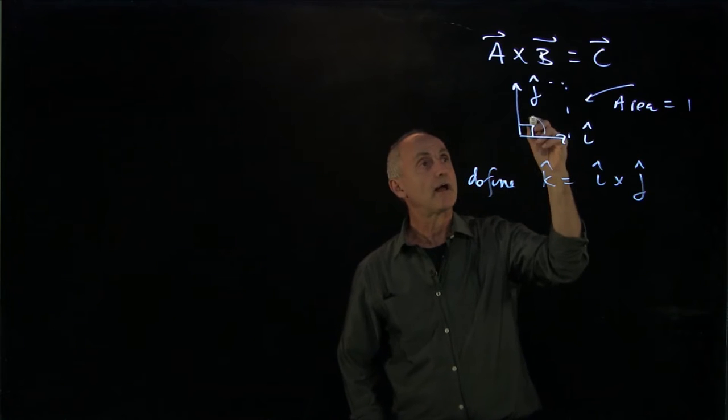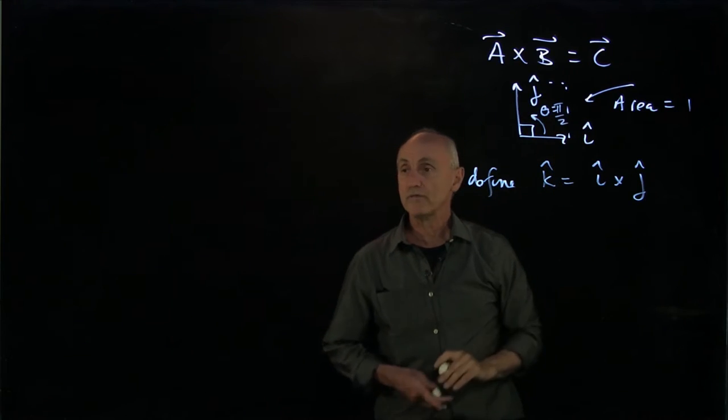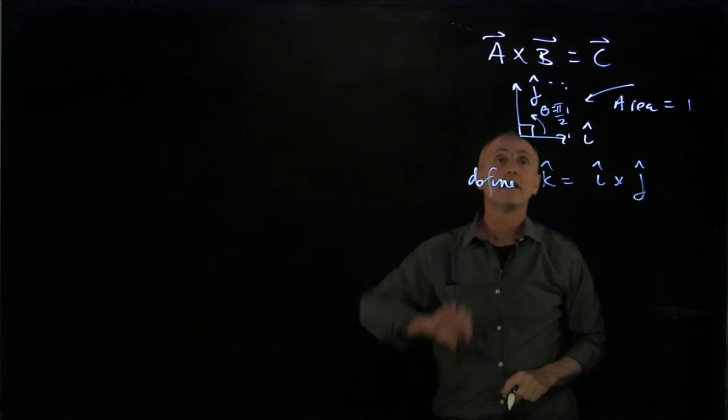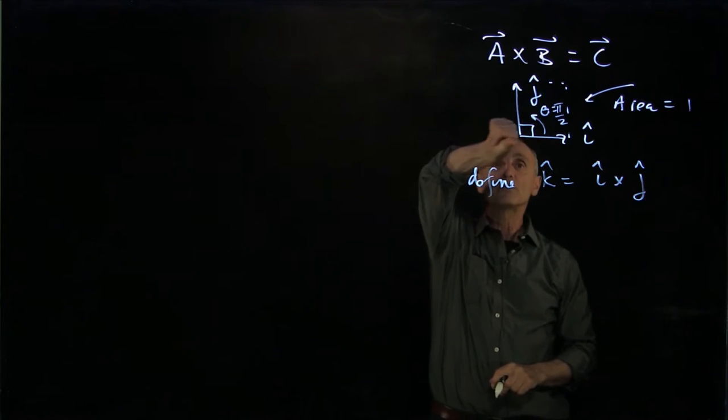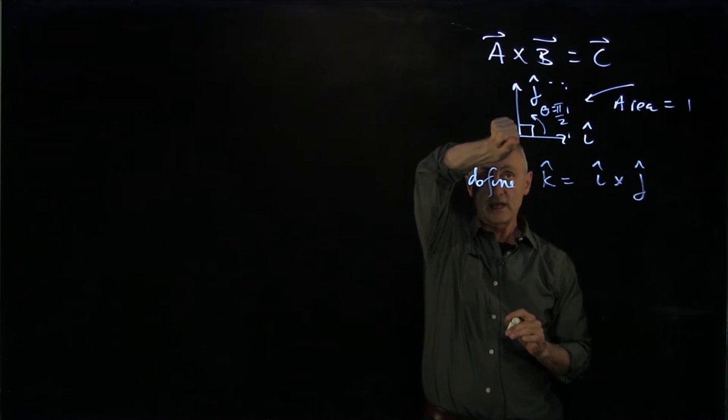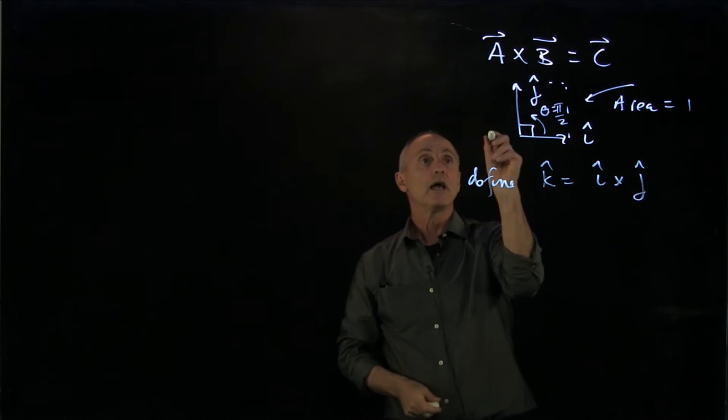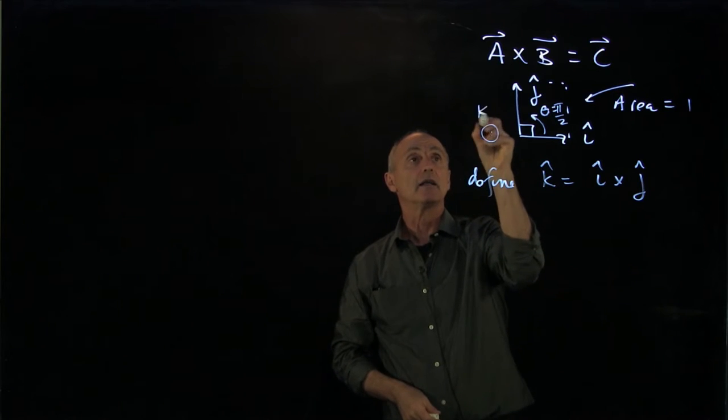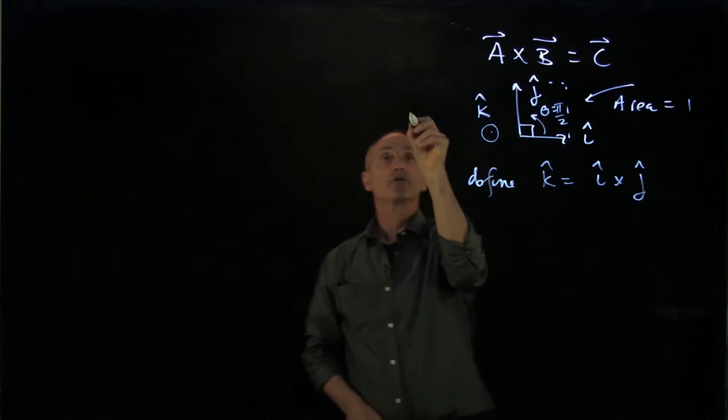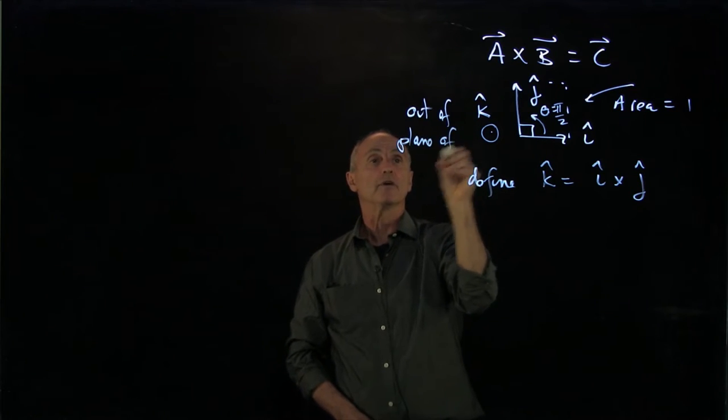Now, our angle theta here was 90 degrees. And so if I use the right hand rule, then i hat cross j hat is the right handed unit normal is out of the plane of the figure. And so I would write k hat like that. And notice k hat is out of plane of figure.